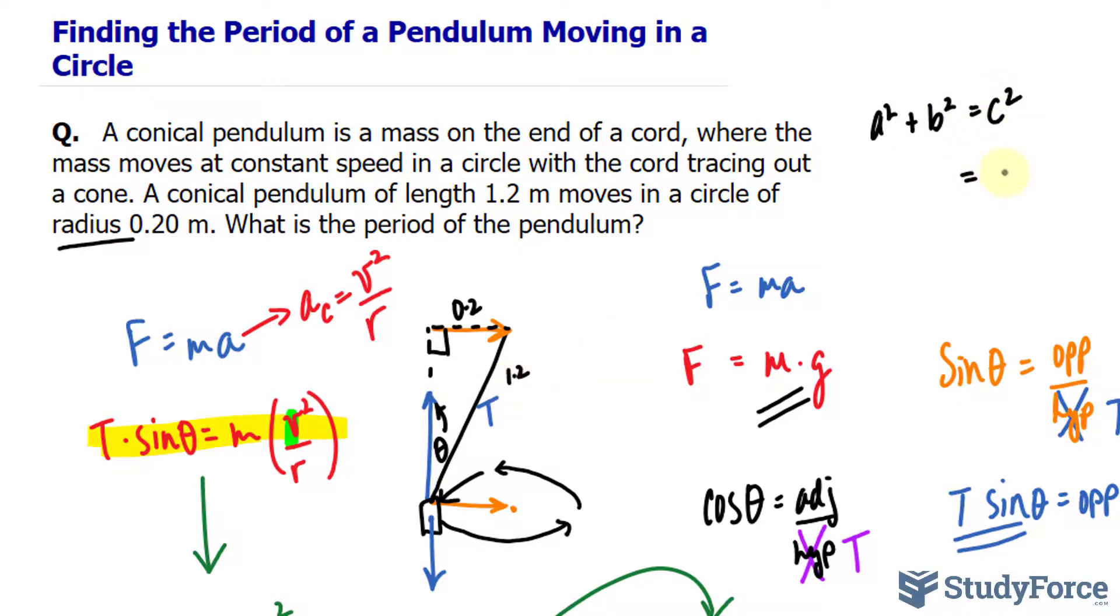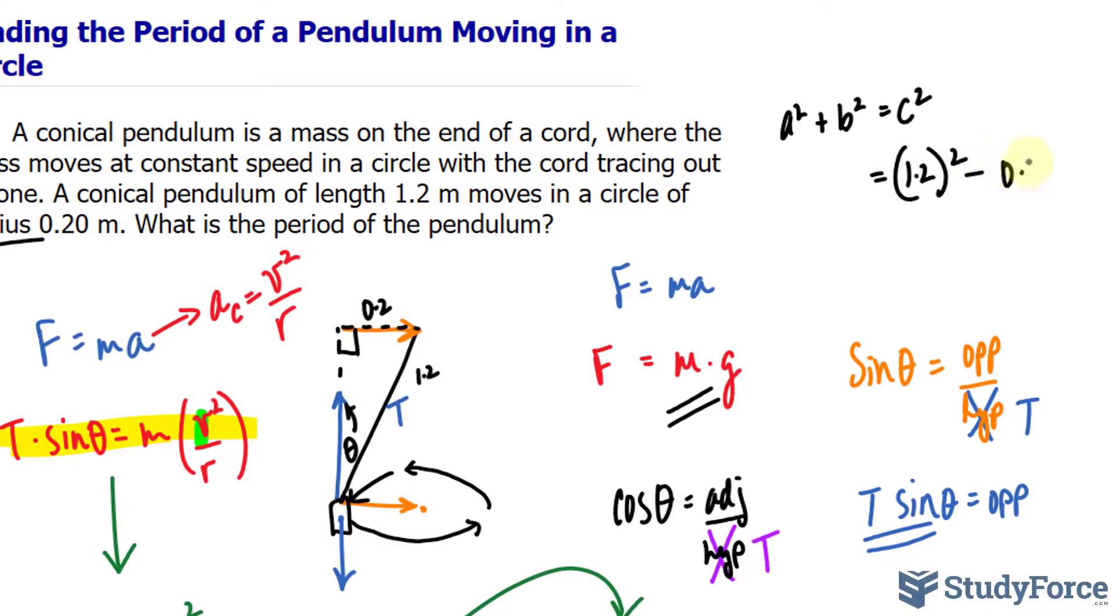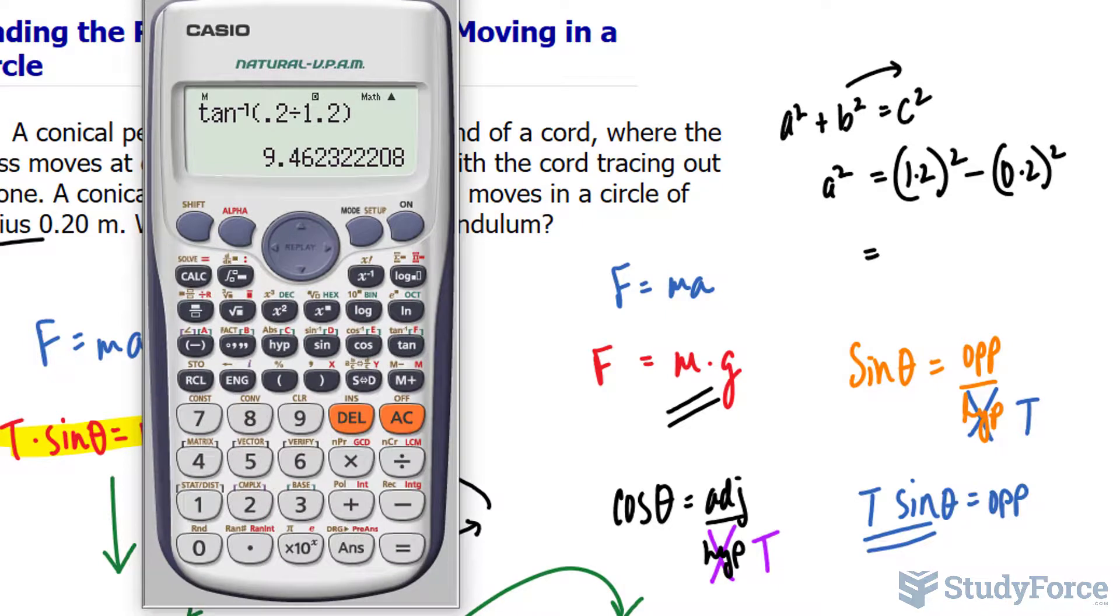Let's call that b. So minus 0.2 raised to the power of 2, I just rearranged. And let's quickly find out what that is. So I have 1.2 to the power of 2 minus 0.2 to the power of 2 square root. Now we have our adjacent.